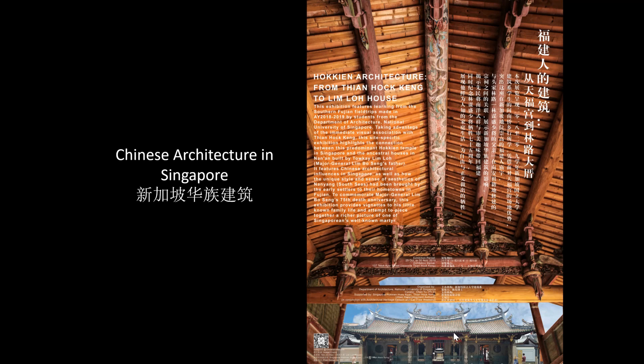For the study of Chinese architecture in Singapore, we have to look at Chinese architecture in China itself to understand what characters were retained. Understanding the origin helps us understand the transformation that happened in Singapore, and lets us identify what influences we received from other countries and ethnic groups.